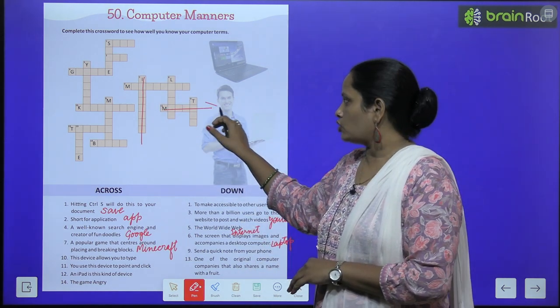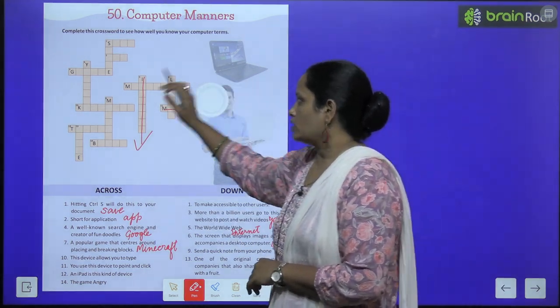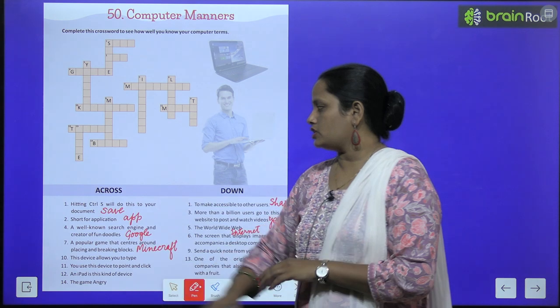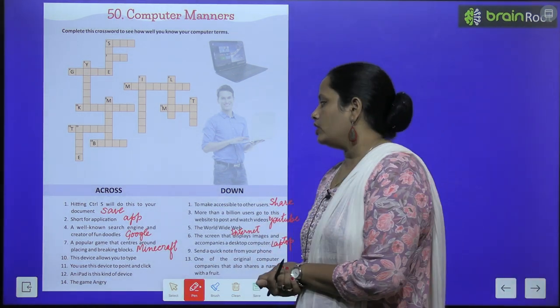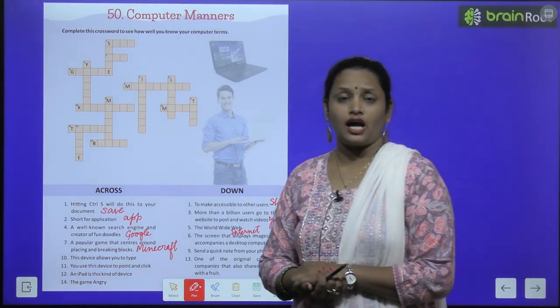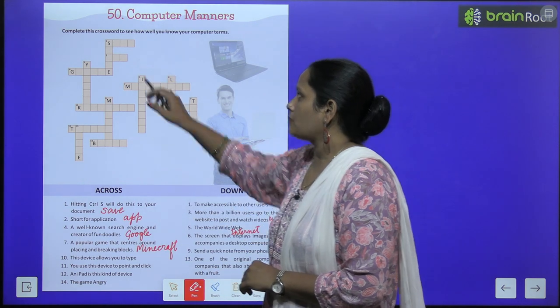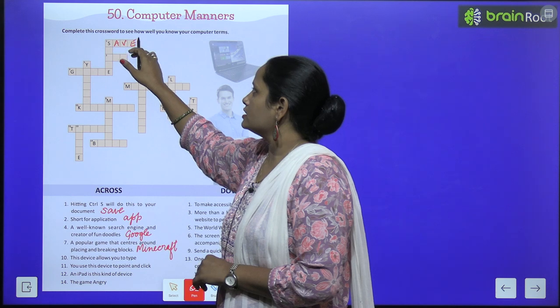So let's move to across first. Across first says hitting Control S will do this to a document. So we will write here save, save.